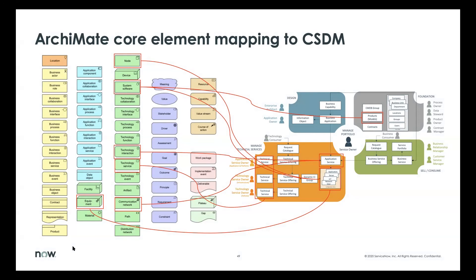This has been the Archimate mapping to CSDM. We didn't cover every element of the model — there are some other things like capability that maps pretty well, but there are a lot of differences in definition. Hopefully this has been helpful. I look forward to feedback — if you have your own mapping you've come up with or any questions, thank you very much.